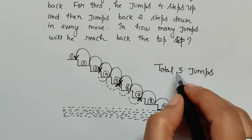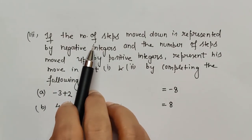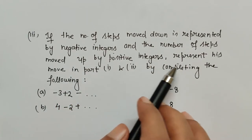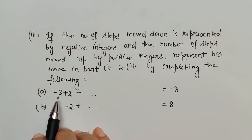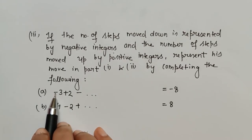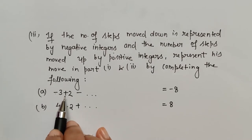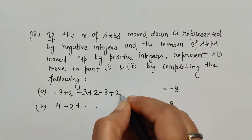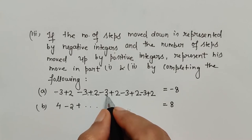After completing five jumps, the monkey reached the top step. For the third part, if steps moved down are represented by negative integers and steps moved up by positive integers, we represent Part 1 as: minus three, plus two, minus three, plus two, minus three, plus two, minus three, plus two, minus three, plus two — and the eleventh jump is minus three. That gives us ten terms plus one final jump.